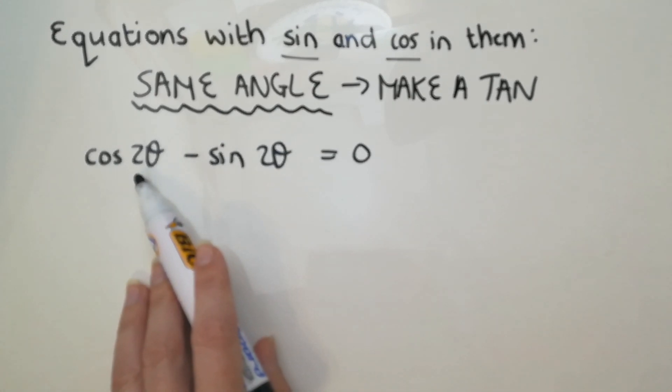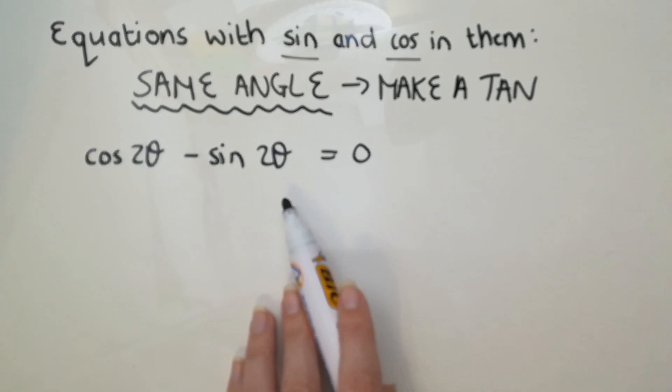And what we want to do is check that the angles are the same. So that's a two theta, and that's a two theta. They could be anything, absolutely anything, as long as they're exactly the same.